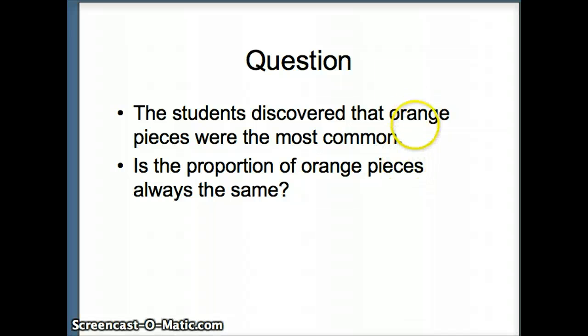The students in the project discovered that orange was the most common color, and the question we're going to ask is, in the manufacturing process, is the proportion of orange pieces always the same, or might it change depending on where the breakfast cereal is produced?